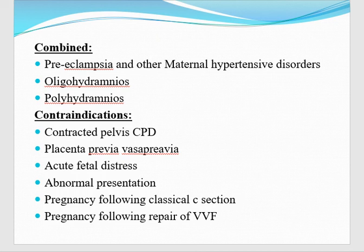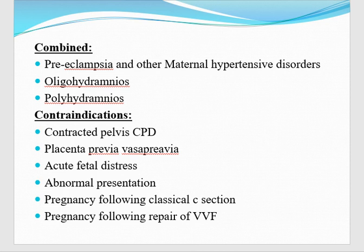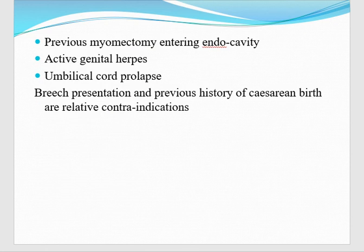Now, what are the contraindications? If there is a contracted pelvis — cephalopelvic disproportion — there is no benefit to start labor because the pelvis is not adequate. Then placenta previa or vasa previa is a contraindication because the patient will start bleeding. Acute fetal distress — we have to rush for delivery by cesarean section. Abnormal presentation — if it is not cephalic, we have to deliver by cesarean section. Pregnancy following classical cesarean section, history of repair of vesicovaginal fistula, previous myomectomy where uterine cavity was opened — we have to deliver by cesarean section. Active genital herpes. Umbilical cord prolapse — immediately deliver by cesarean section. Breech presentation and previous cesarean section are relative contraindications.